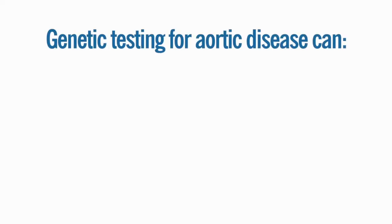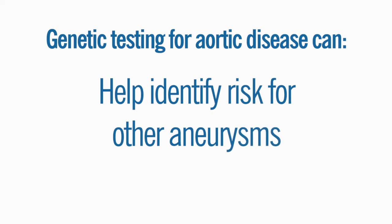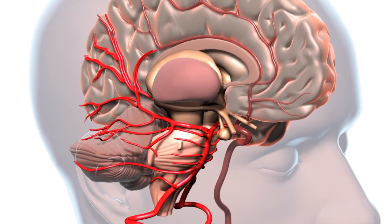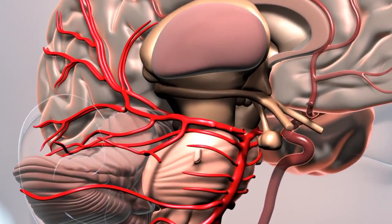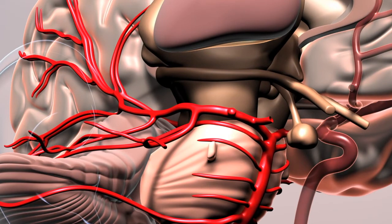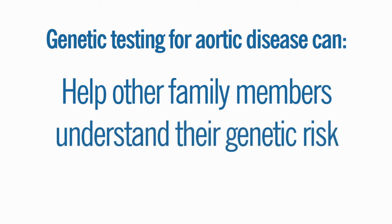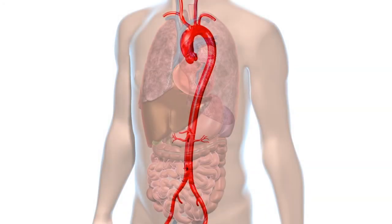Genetic testing for individuals with aortic disease can help identify risk for other aneurysms. Some of the genetic causes of aortic aneurysms also increase the risk for other aneurysms, including in the brain. If such a gene mutation is found, your health care providers can recommend screening to determine if any further treatment is needed. Genetic testing can also help other family members understand their genetic risk — family members who have a genetic test learn if they have an increased risk to develop an aneurysm.